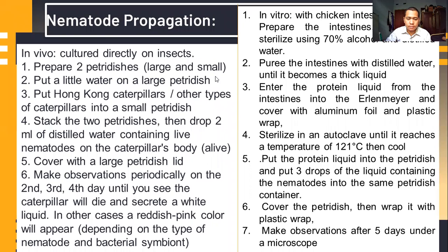For nematode propagation using the in vivo method, we first prepare two petri dishes - both large and small. Put a little water in the large petri dish, then place a mealworm or other caterpillar into the small petri dish. Stack the two petri dishes on top of each other, then drop two milliliters of distilled water containing nematodes onto the caterpillar's body. Cover with the large petri dish and make periodic observations on the second, third, and fourth day until the caterpillar dies and secretes a white or red liquid, depending on the nematode type and bacterial symbiont.